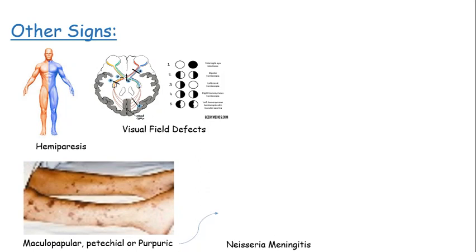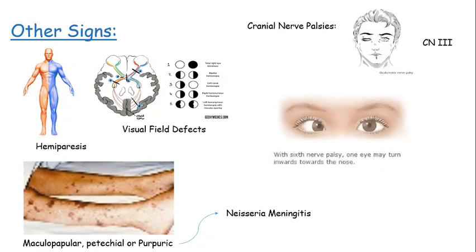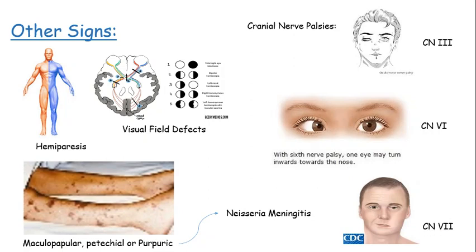Other signs include hemiparesis, visual field defects, maculopapular or petechial rash — specifically found in Neisseria meningitidis — and cranial nerve palsies involving the oculomotor nerve, abducens nerve, and facial nerve.